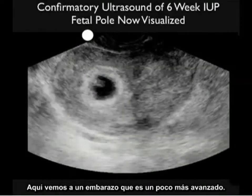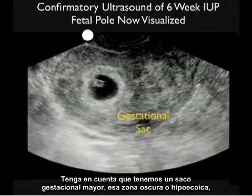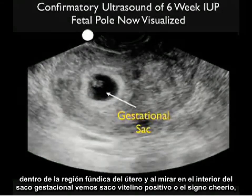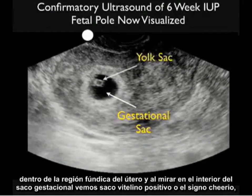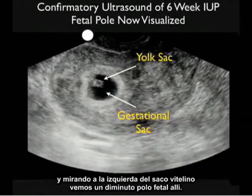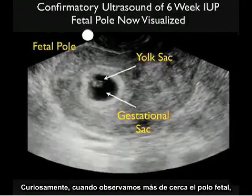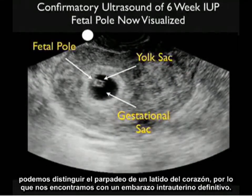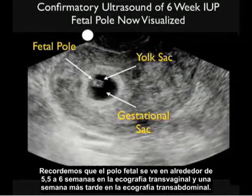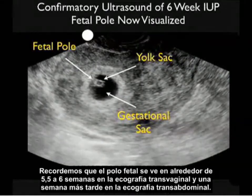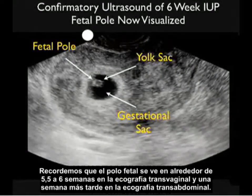Here we see a pregnancy that is a bit further advanced — a larger gestational sac in the hypoechoic fundal region of the uterus. Inside the gestational sac we see the positive yolk sac or cheerio, and just to the left of the yolk sac, a tiny fetal pole. As we zoom in on that fetal pole, we can make out the flicker of a heartbeat — confirming a definitive intrauterine pregnancy. The fetal pole is seen at about 5.5 to 6 weeks on transvaginal sonography and about a week later on transabdominal sonography.